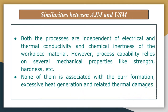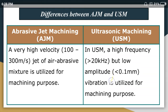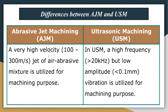Now let us come to the differences. Here I have shown two columns — the first column covers points related to abrasive jet machining and the second column covers points related to ultrasonic machining. In abrasive jet machining, a very high-velocity jet of 100 to 300 meters per second of abrasive mixture is utilized for machining. In ultrasonic machining, a high frequency greater than 20 kHz but low amplitude less than 0.1 mm vibration is utilized for machining.